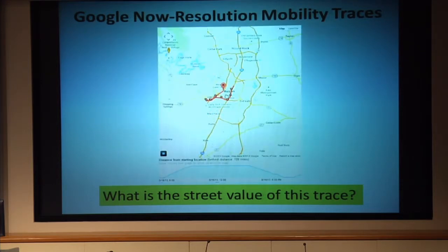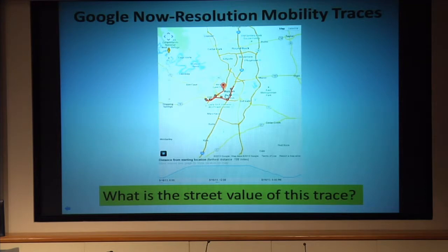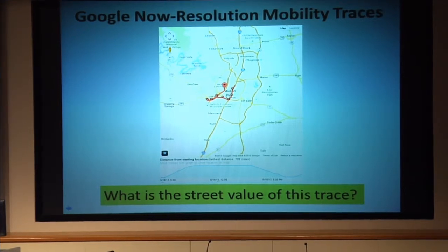A student of mine, Ken Bassina, offered me these mobility traces. We were actually driving together — it traced us all the way as we went to Samsung to make a visit from Austin. It did so at very good resolution, maybe 100 meters, so it's even better than the cell-level resolution.